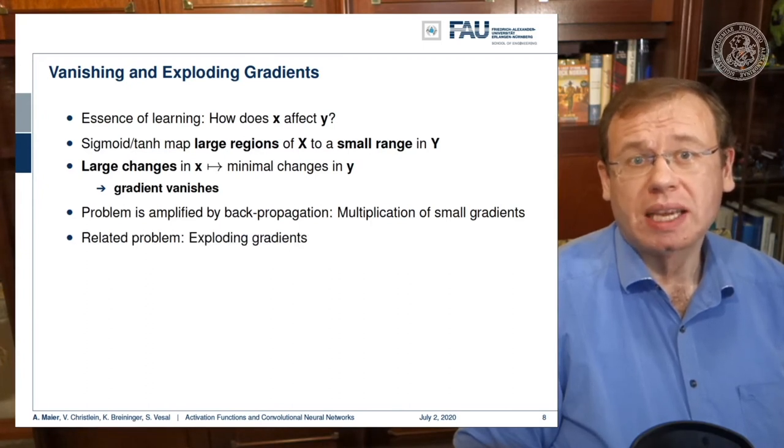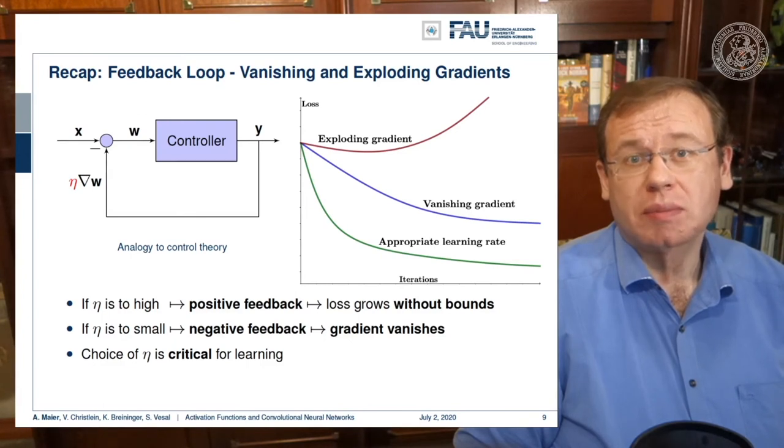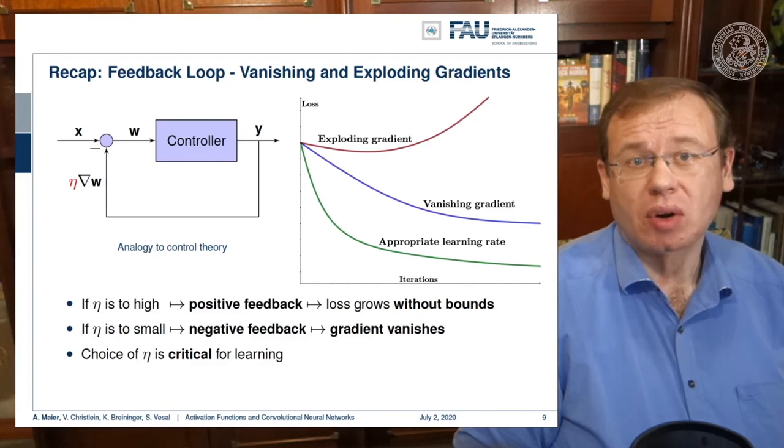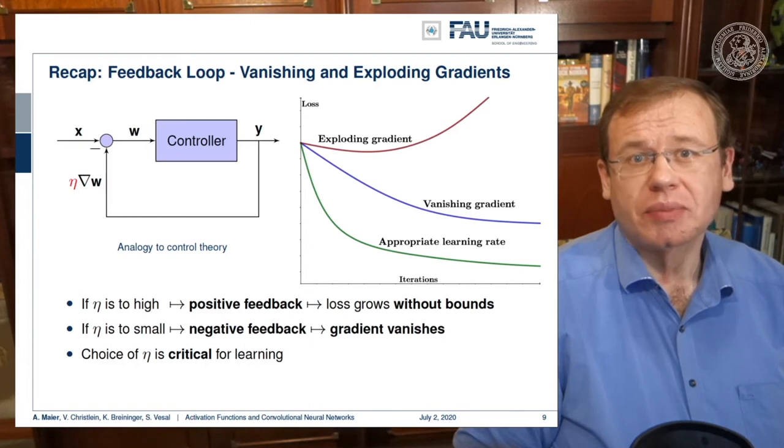A very related problem is the exploding gradient. Here we have the problem that we have high values and those high values amplify each other. We can think about our feedback loop and the controller. If you don't adjust the learning rates appropriately, you get exploding gradients or vanishing gradients. But it's not just the learning rate either. The problem can also be amplified by the activation functions. In particular, the vanishing gradient is a problem that occurs with those saturating activation functions. We might want to think about better activation functions.